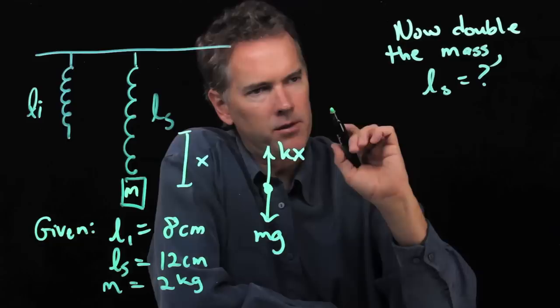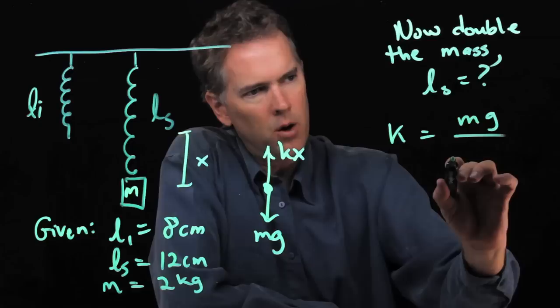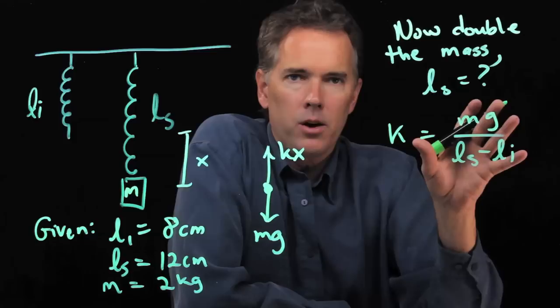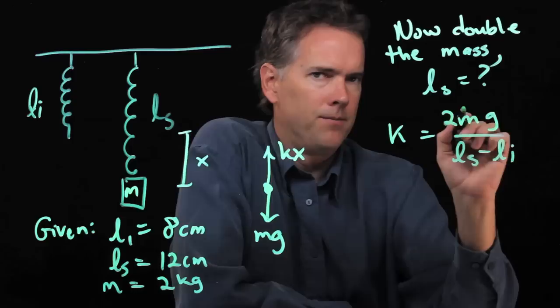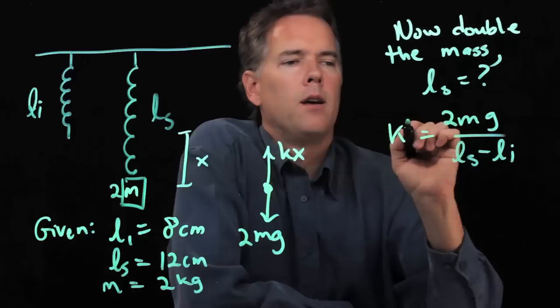Let's go back to that last equation. We had K equals Mg over LS minus Li. We can use that equation again, but now we're going to change M to 2M. This Mg becomes 2Mg.